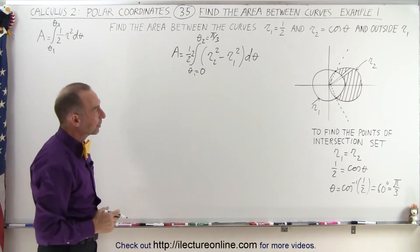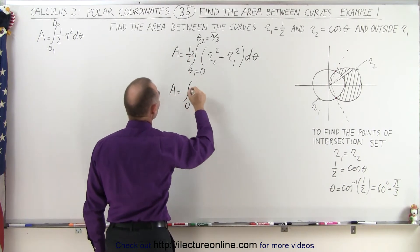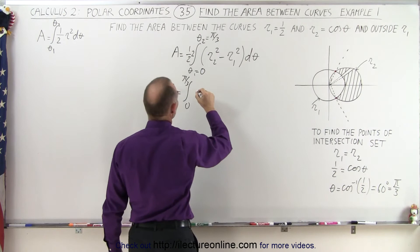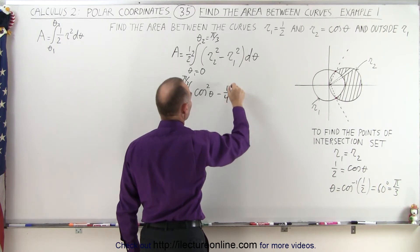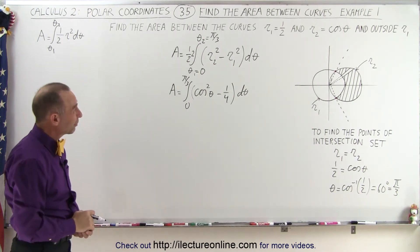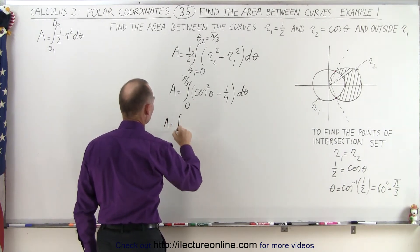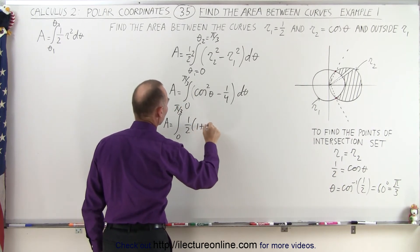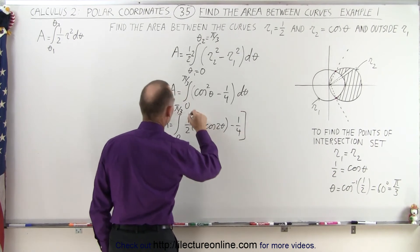Now we can go ahead and find the integral. The area equals 2 times 1/2, which is 1, times the integral from 0 to π/3 of r2 squared minus r1 squared dθ. Since r2 is cosine of theta, that gives cosine squared of theta, and r1 squared is (1/2) squared which is 1/4. To integrate cosine squared of theta, we rewrite it as 1/2 times (1 plus cosine of 2θ), minus 1/4, times dθ.